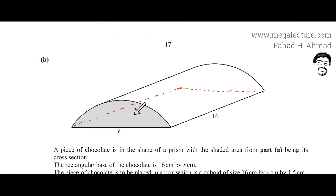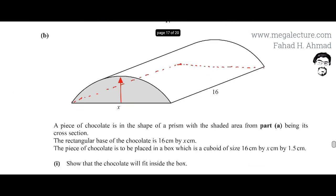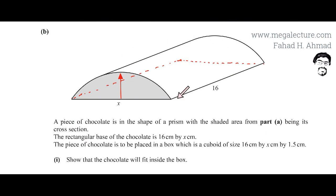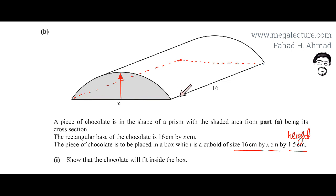We need to show that the chocolate will fit inside the box. The length and width of the chocolate exactly match those of the cuboid box. The issue is the height — we don't know the height of the chocolate, but the box height is 1.5 centimeters. We need to prove that the height of the chocolate is less than 1.5 centimeters.